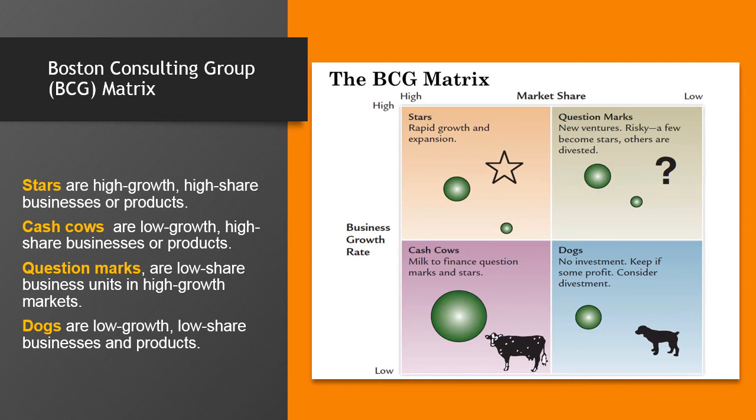Dogs — let's hope a company doesn't have too many of them, but they're usually there somewhere. If a company has a product that's low in market share and it's a low rate of growth, it's considered to be a dog, and it should be sold, liquidated, or maybe even repositioned. Dogs don't generate much cash for the company, and since they have low market share, there's really very little potential for growth. Because of this, dogs can turn out to be cash traps, tying up the company's funds for long periods of time.